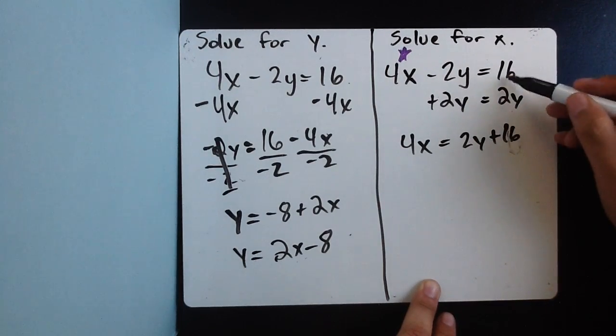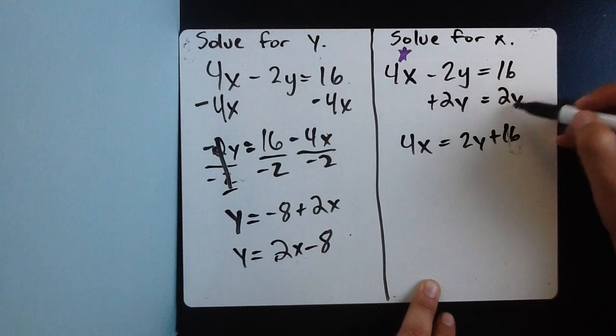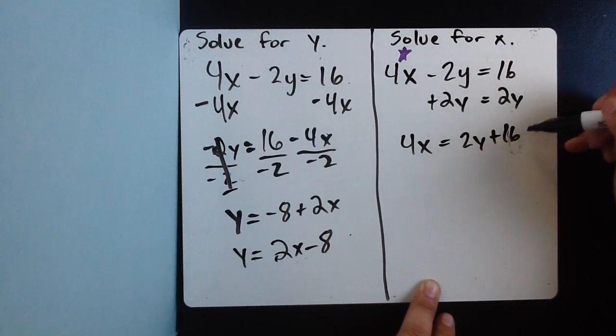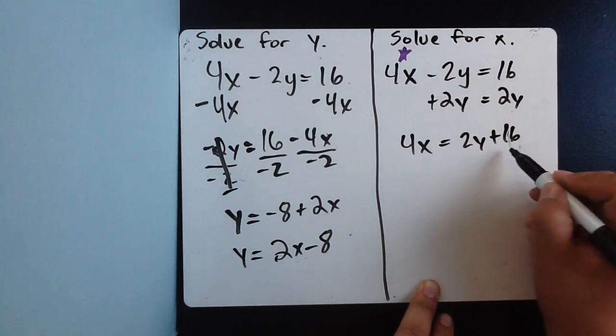Remember, I can't add these. These are two different terms. This is a constant, and this is an unknown number multiplied with 2. So they can't be added, and I can't get 18y. What I get is this, 2y plus 16.